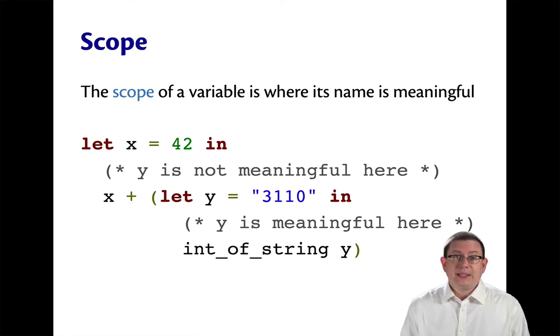If we say let x equal 42 in, then in that body expression, x does have a meaning, but not outside of it. We have a nested inner let expression here, let y equal 3110 in. y is meaningful in the scope of that inner let expression, but it's not meaningful in the scope of the outer let expression. So let expressions are what give us the delimitation of scope inside of an OCaml program.